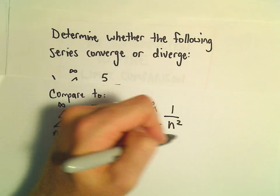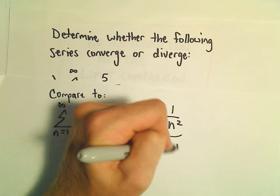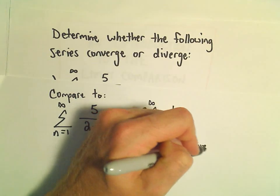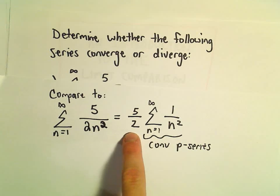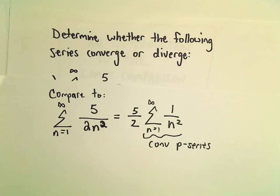And then we would be left with 1 over n². Now, 1 over n² is a convergent p-series. That simply means it has some finite value. Well, if you multiply it by 5 over 2, it's still going to be finite. So this is a convergent series.